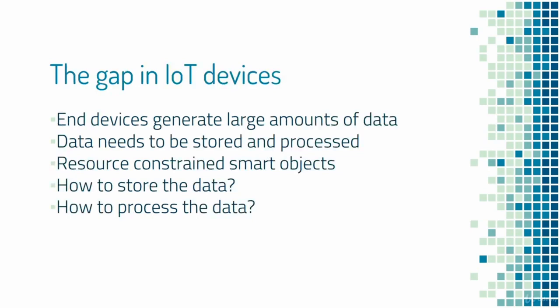Let's look at the gap in the IoT device ecosystem and what can be done to fill it. End devices are usually data producers in the form of sensors, or data consumers in the form of actuators, or both. The data produced is large and thus usually overwhelming for the end device to store and process, given that these devices are resource constrained, with RAM ranging from a few kilobytes to a few megabytes with limited storage.